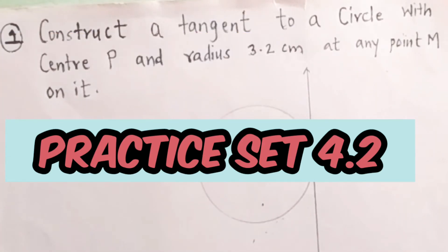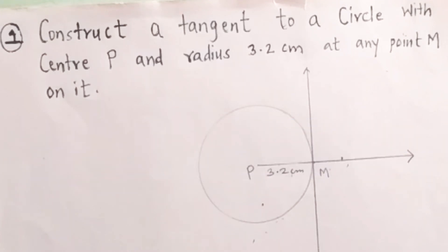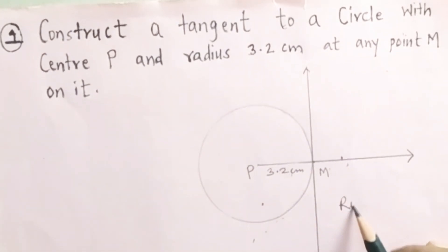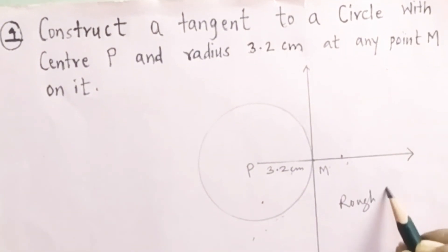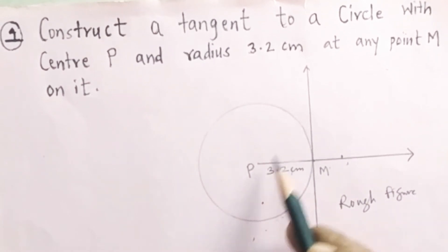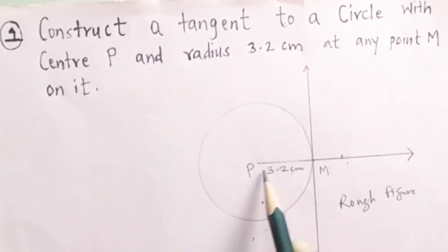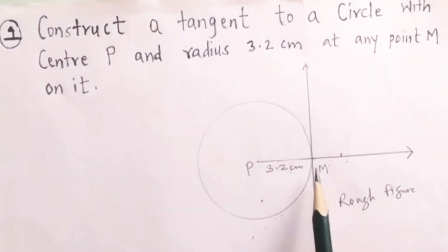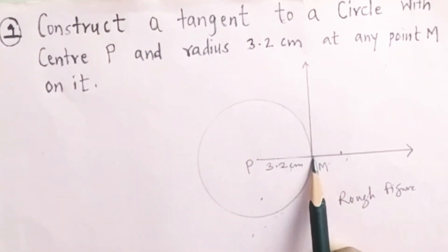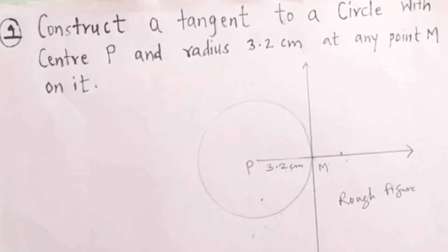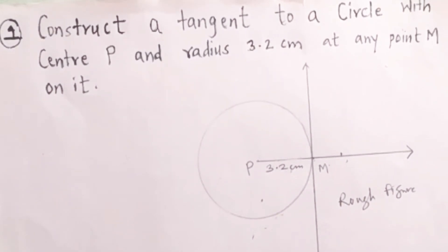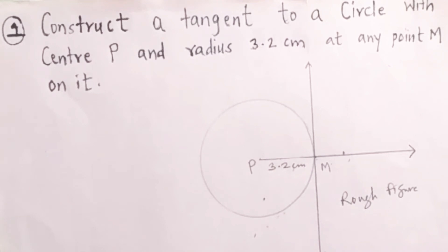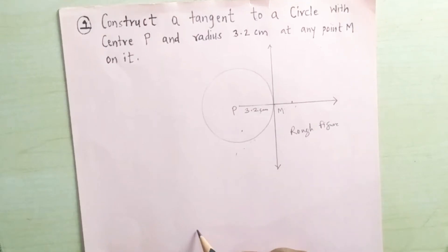First example: construct a tangent to a circle with center P and radius 3.2 centimeters at any point M on it. Here is the rough figure — a circle with center P and radius 3.2 centimeters. M is any point on the circle and we have to draw the tangent passing through point M.